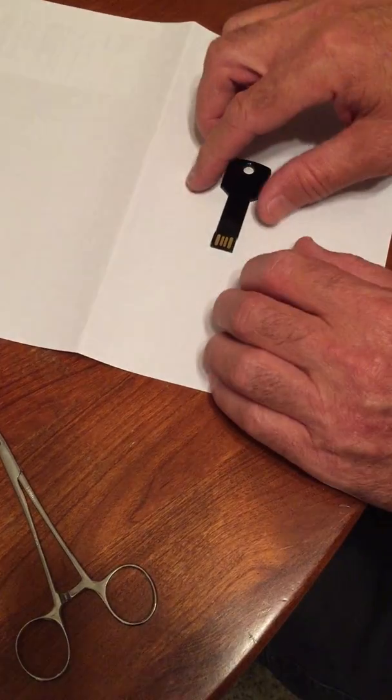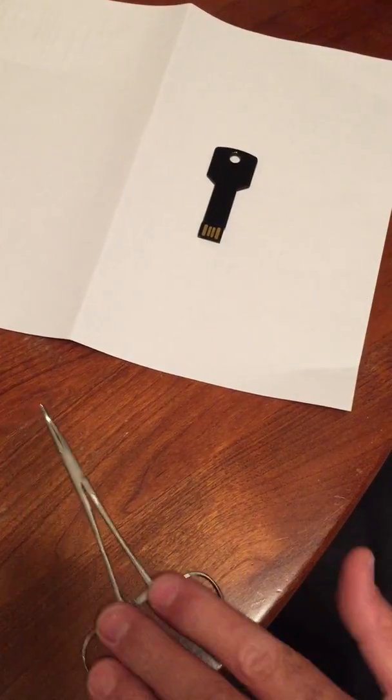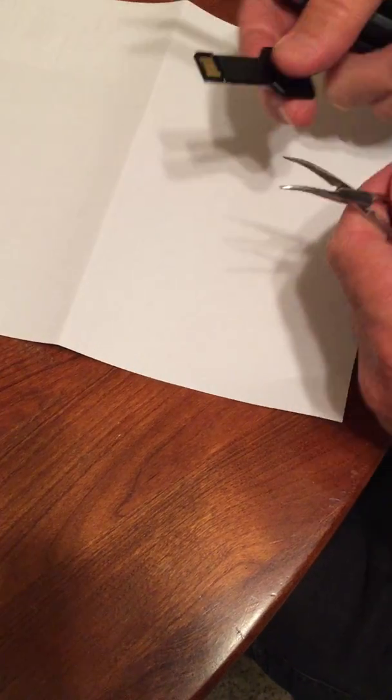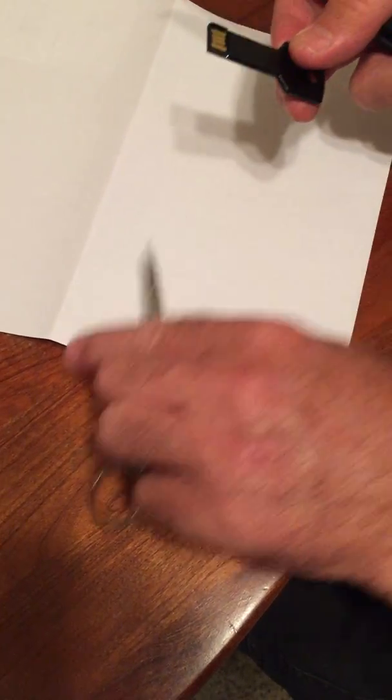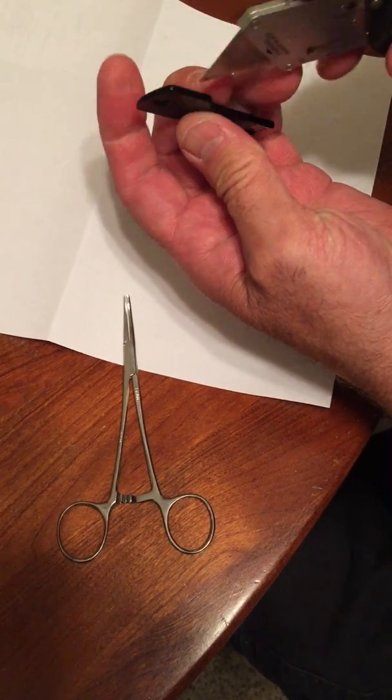We're going to disassemble the 64 gigabyte USB flash drive to see what's inside. Nobody else has done this, so here we go. First, you might need a clamp to hold things, but you need a knife.